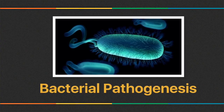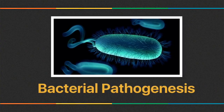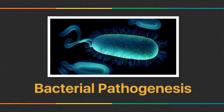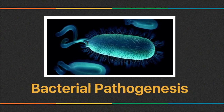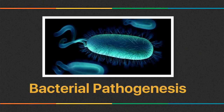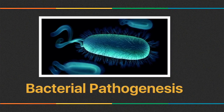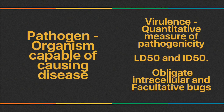Hello, this is one of the few videos I'm making on bacteriology and parasitology. This one is about bacterial pathogenesis. Let's get to it. Starting with definitions: a pathogen is an organism capable of causing disease. Virulence is a quantitative measure of pathogenicity. LD50, or lethal dose 50, is the number of organisms needed to kill half the host.